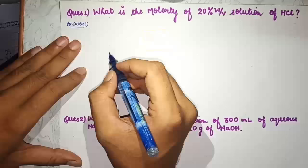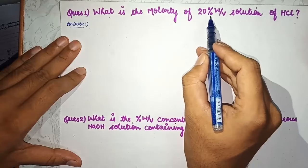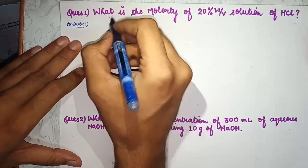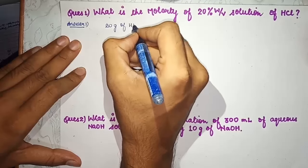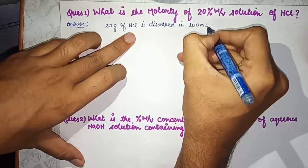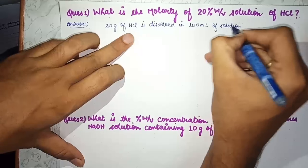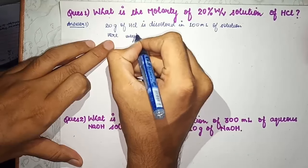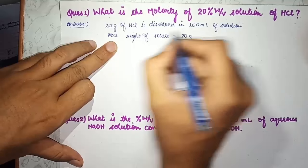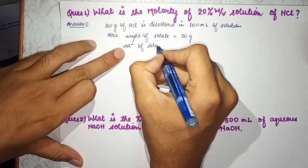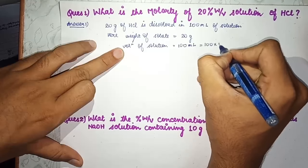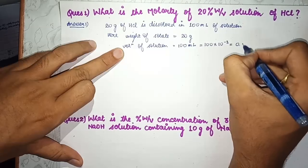The first question is: what is the molarity of a 20% weight by volume solution of HCl? A 20% weight by volume solution of HCl means 20 gram of HCl is dissolved in 100 ml of solution. So weight of solute is 20 gram, and volume of solution is 100 ml, which we convert to 0.1 liter.